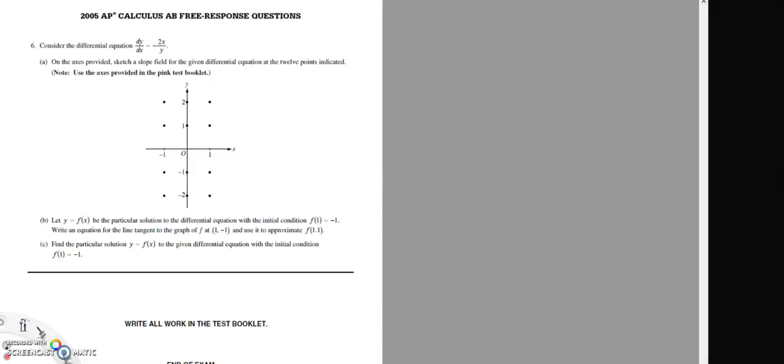So in this video, we're going to solve the 2.05 FRQ. We have dy over dx equals negative 2x over y. So we're going to start off with negative 1, 1. When you do that, you're going to get 2 over 1, so your slope is 2.